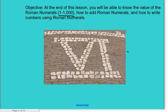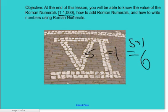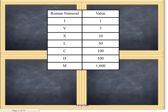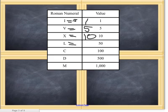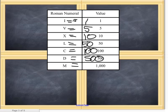This one on the sidewalk equals 6, because V equals 5 and I equals 1, and 5 plus 1 equals 6. Each Roman numeral value: I equals 1, V equals 5, X equals 10, L equals 50, C equals 100, D equals 500, and M equals 1000. Yay.